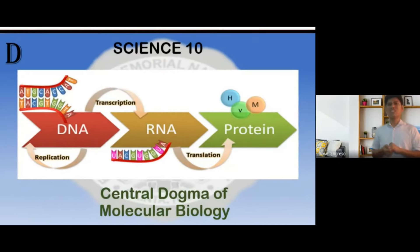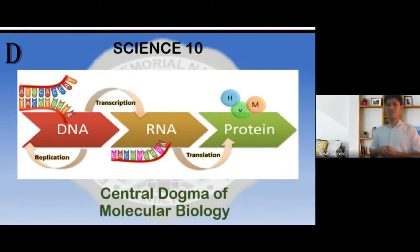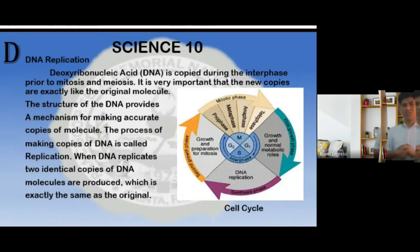Here is the illustration of the summary of the central dogma of molecular biology. It shows that DNA needs to undergo the process of replication. From that, the DNA produces a message that becomes messenger RNA in the process of transcription. And the mRNA needs to undergo the process of translation to produce proteins.